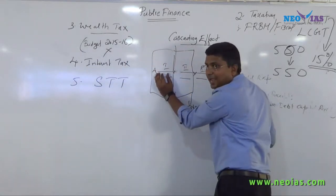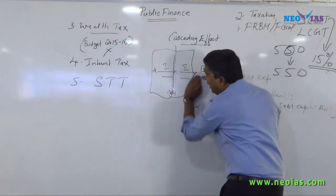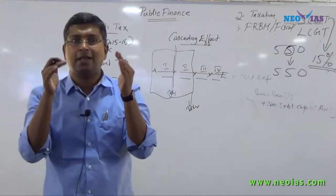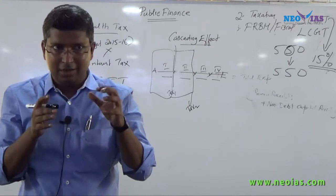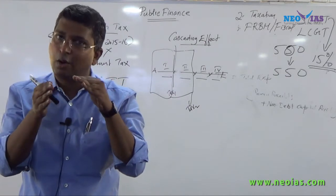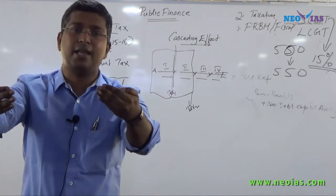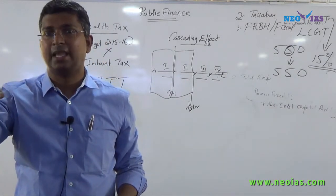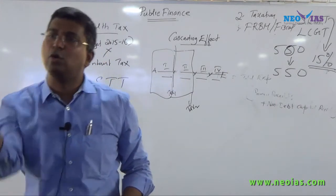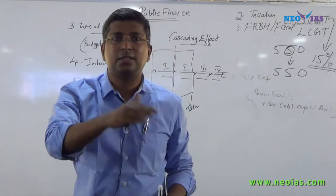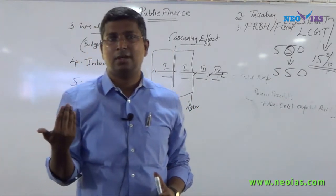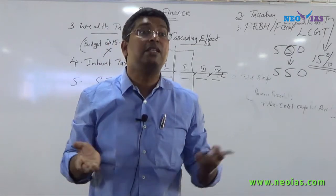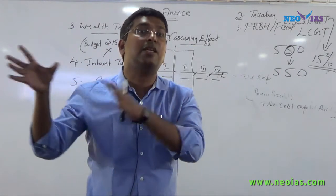We have already paid tax in stage 1. Again, to that tax, it is included here. There is a tax on tax. An already-paid tax is being taxed again. This is what is called the cascading effect. When it goes to stage 3, the same process happens. So what happens to the price of that product? It increases because of the cascading effect.